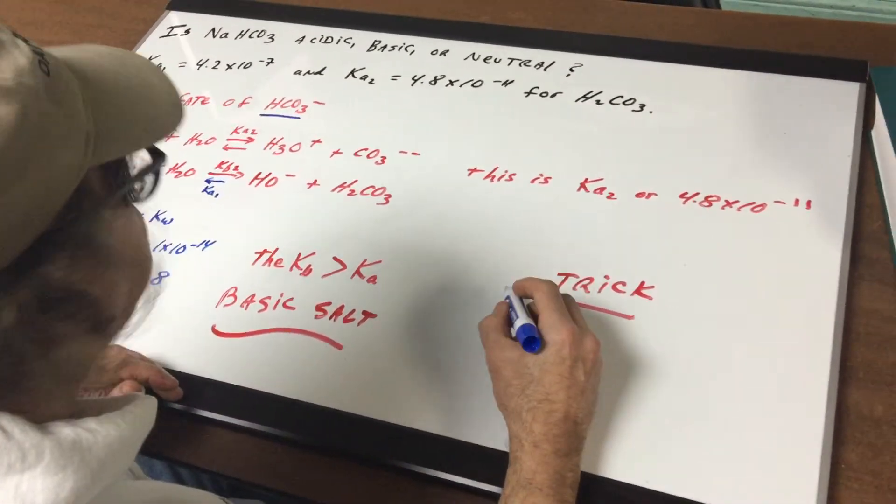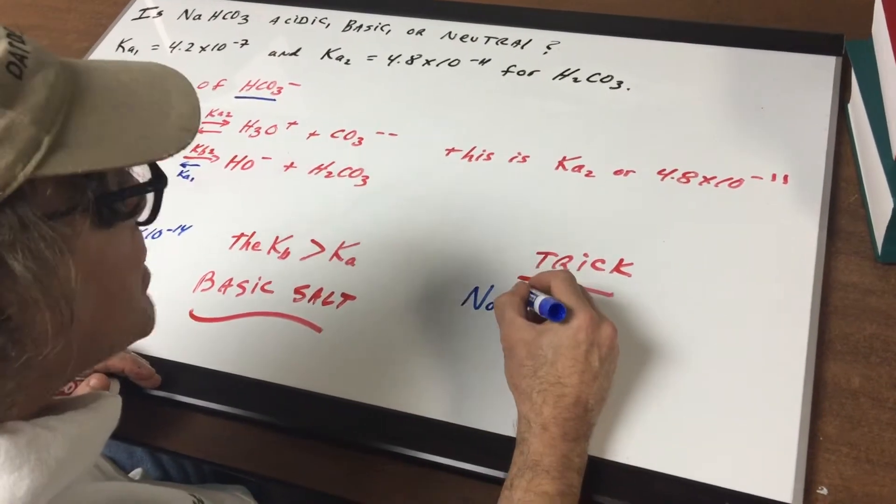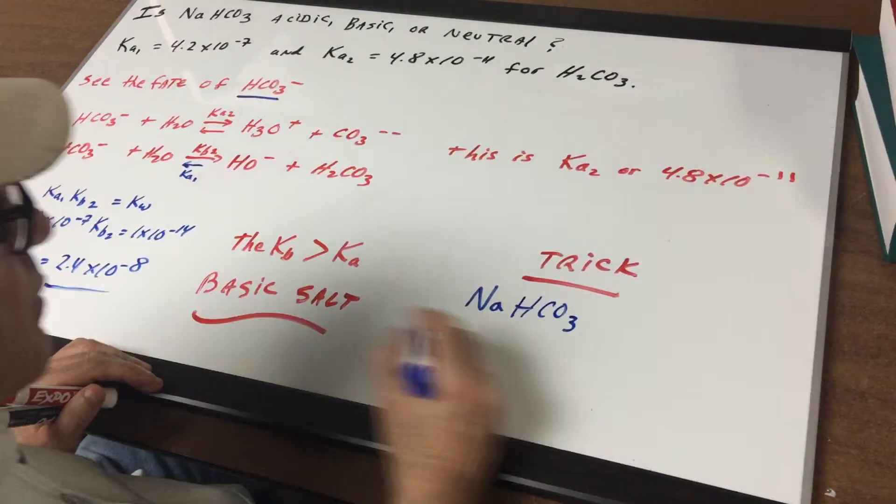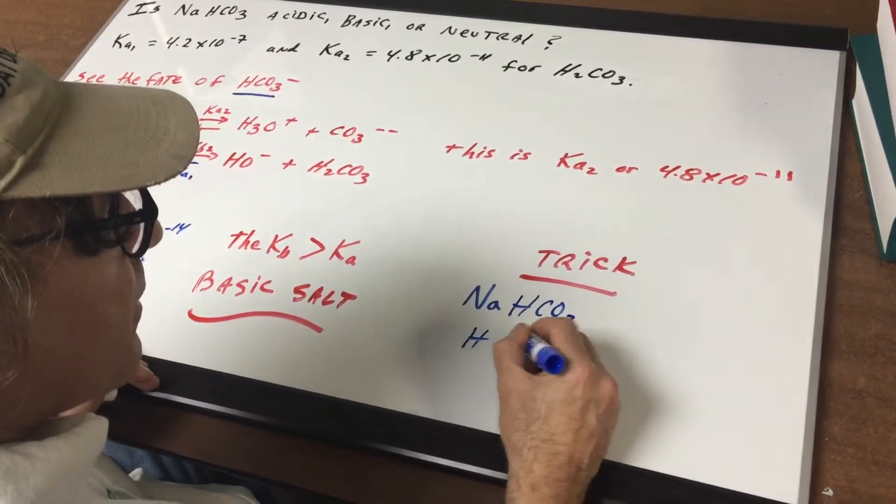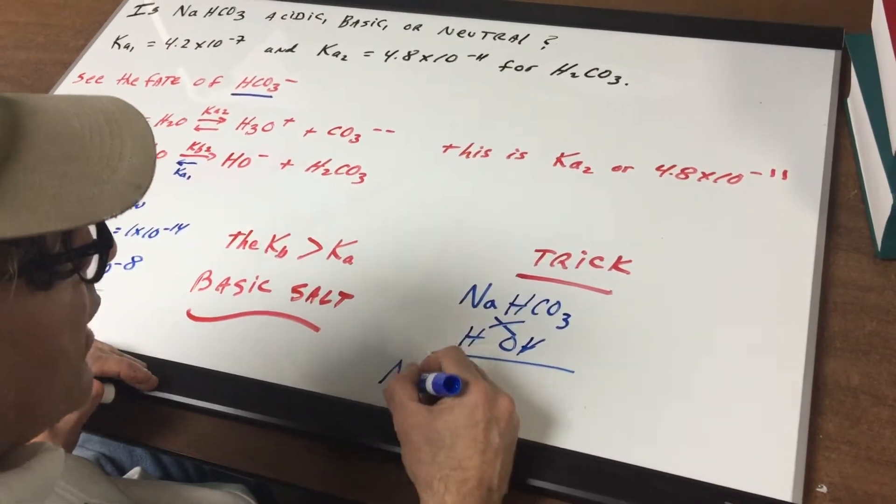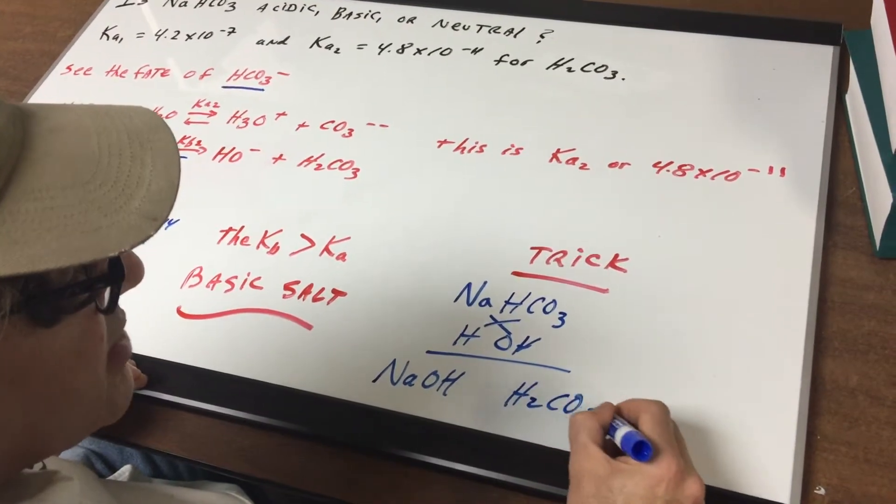I can show you a little trick that will most likely work in all cases or 99% of the time. All you would do is take this and put it in water and crisscross and meet the two parents. You would get NaOH and here you would get H2CO3.